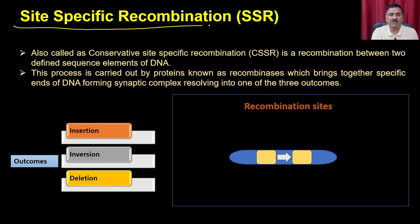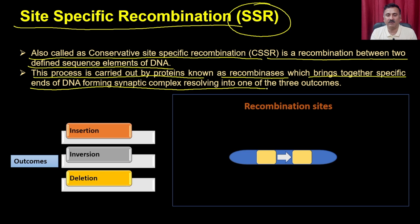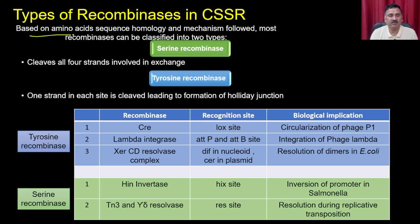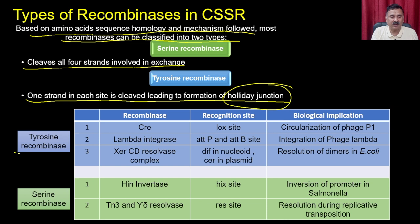Site-specific recombination, also called conservative site-specific recombination or CSSR, is a recombination between two defined sequence elements of DNA, carried out by proteins known as recombinases, which bring together specific DNA ends forming a synaptic complex resolving into three outcomes: insertion, inversion, or deletion. Based on amino acid sequence homology and mechanism, recombinases are classified into two types: serine recombinases, which cleave all four strands, and tyrosine recombinases, where one strand on each side is cleaved, leading to formation of Holliday junctions.